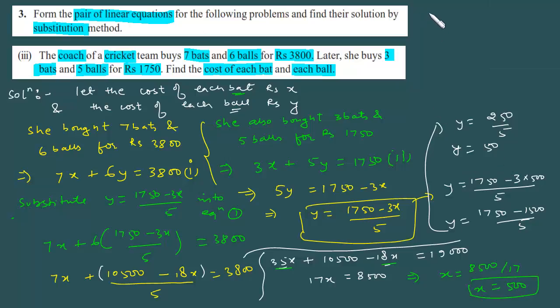Hence, or therefore, cost of each bat is Rs. 500 and cost of each ball is Rs. 50. So this completes our solution. Let us now move on to the 4th section of the same question.